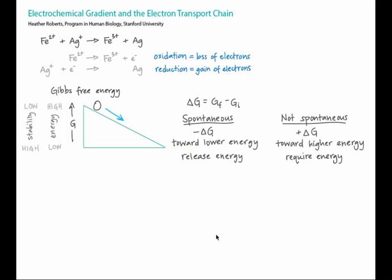For a quick review of thermodynamics, remember that Gibbs free energy is a measure of the total energy that can be harnessed to do work, and is a way to quantify the spontaneity of a process. Just like rocks naturally roll downhill, all processes naturally tend to go toward lower energy, which is higher stability.